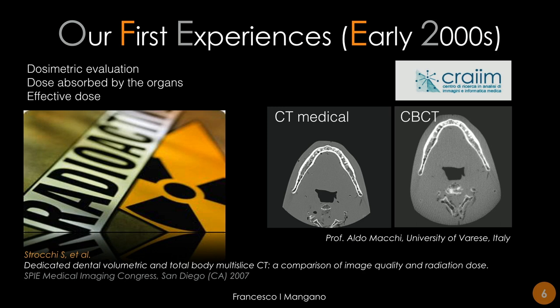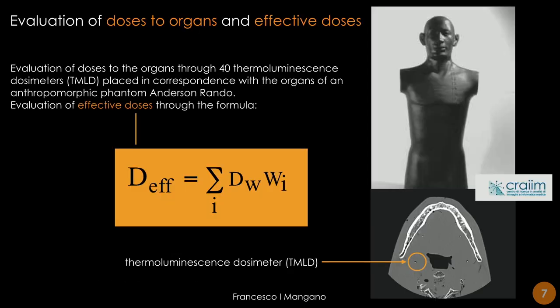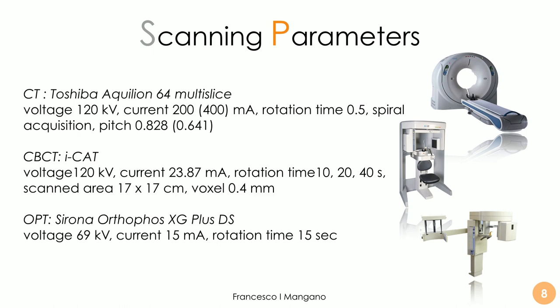Our first experiences date from the early 2000s, when we made dosimetric evaluations of the dose absorbed by organs and the effective dose, comparing conventional medical CT with cone beam computed tomography. This work was made by Professor Sabina Strocki, Professor Aldo Macchi, and all the team at the University of Varese. We used the Anderson Raldo phantom, placed some dosimeters, and exposed this phantom to different scans with different machines to evaluate the effective doses. We compared three machines: a conventional medical CT — the Toshiba 64 multi-slice — a CBCT combined computer tomography (the ECAT, available at that time), and a digital orthopantomograph — the Sirona Orthophos.